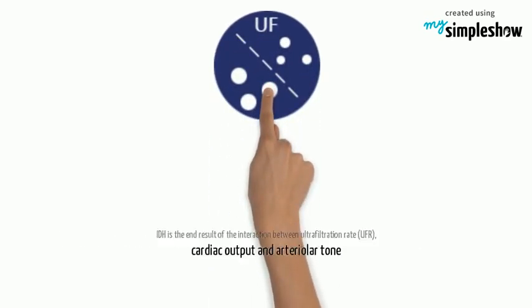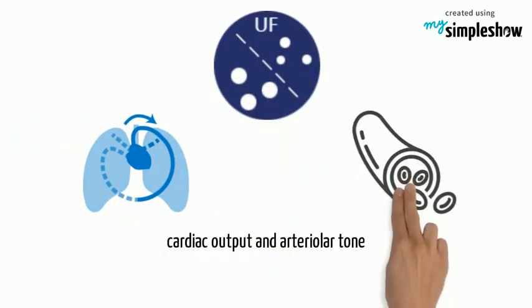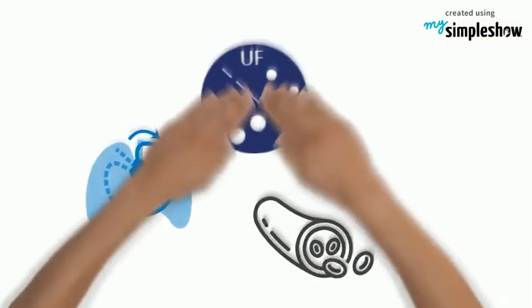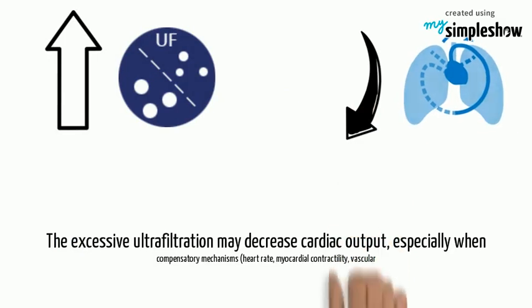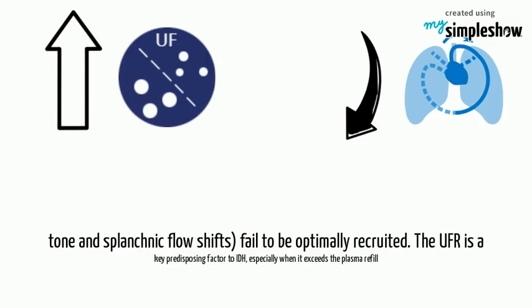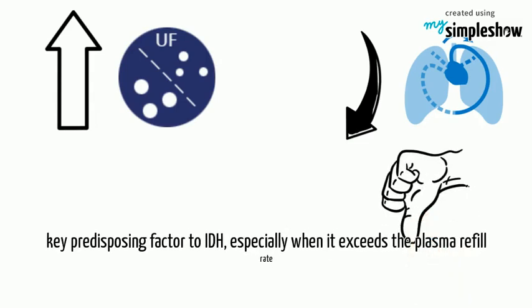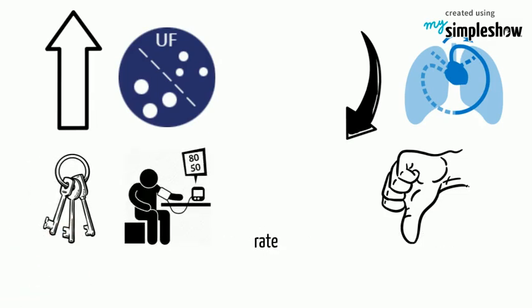IDH is the end result of the interaction between ultrafiltration rate, UFR, cardiac output and arteriolar tone. The excessive ultrafiltration may decrease cardiac output, especially when compensatory mechanisms — heart rate, myocardial contractility, vascular tone and splanchnic flow shifts — fail to be optimally recruited. The UFR is a key predisposing factor to IDH, especially when it exceeds the plasma refill rate.